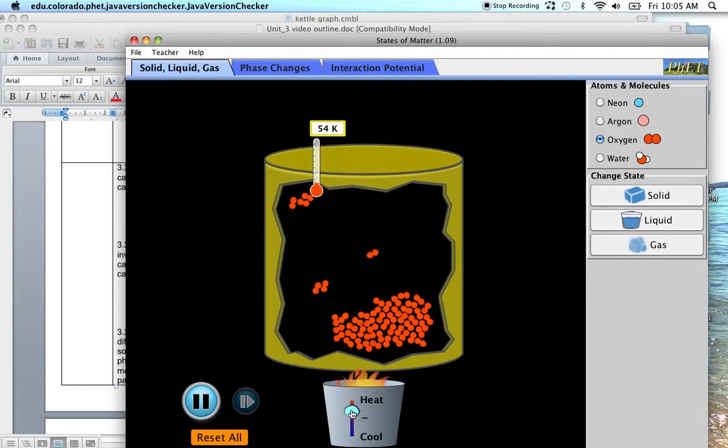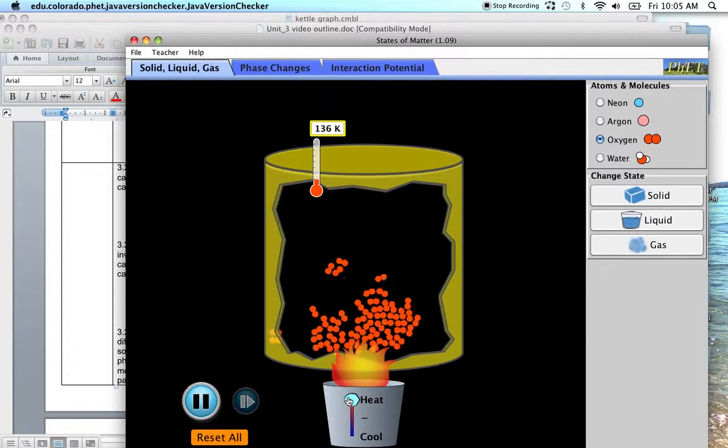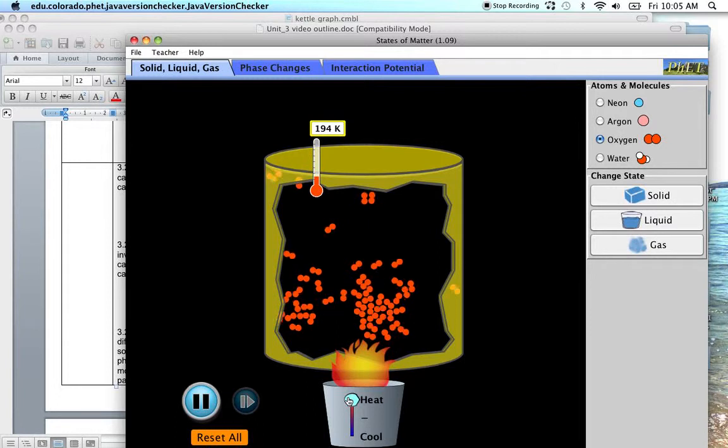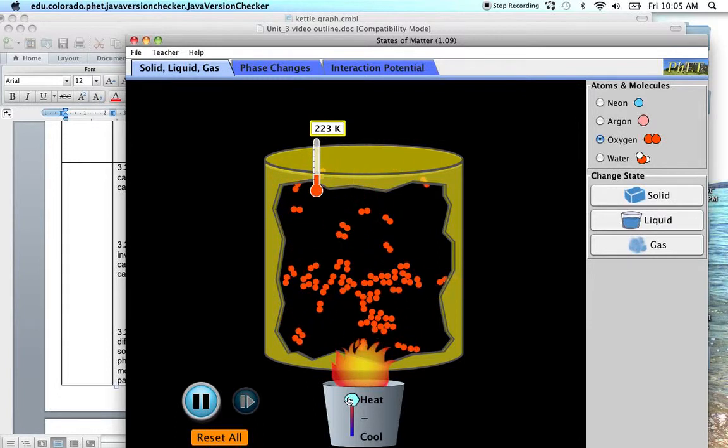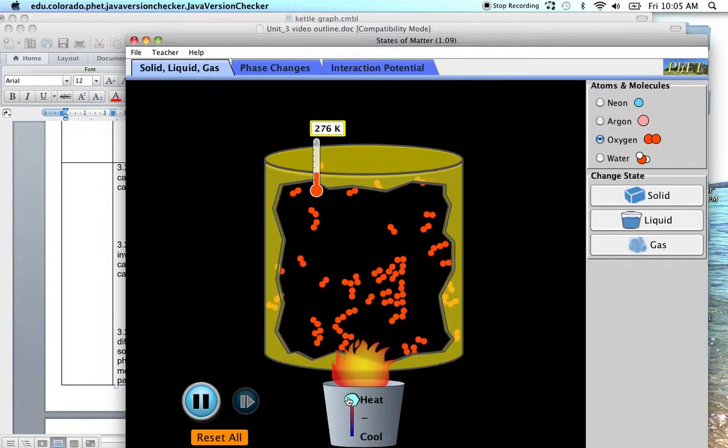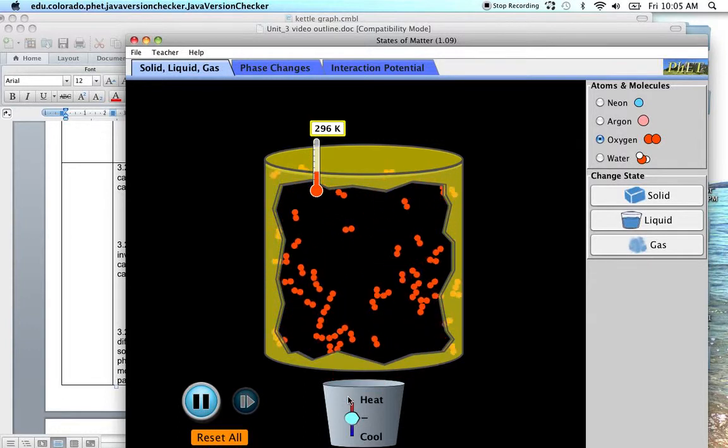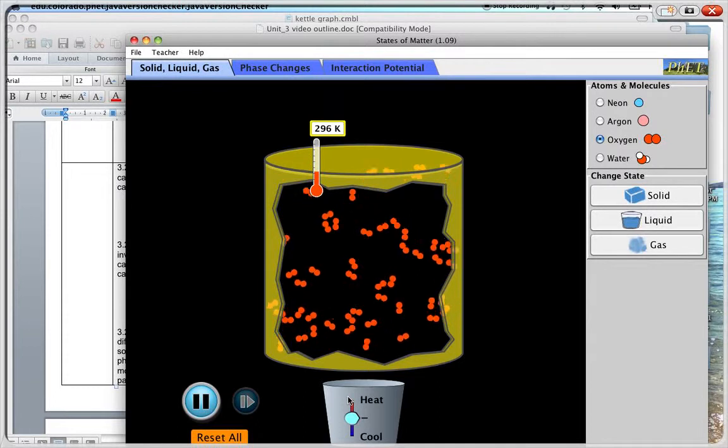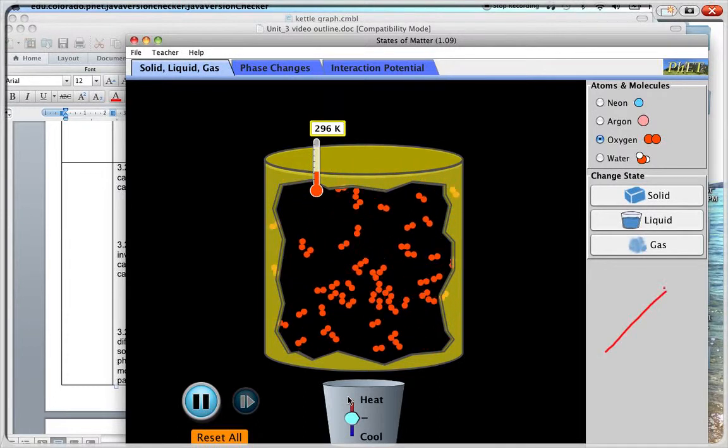Now, as I continue to increase it, as I increase it here, what's happening here is that the particles are starting to separate completely from one another. They're going into a gas. And now, you'll find that you get your movement. They're separated from each other. The movement is translational.